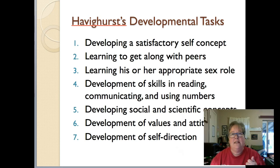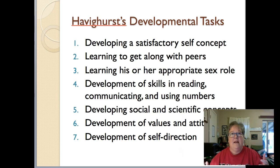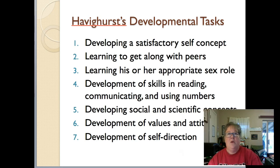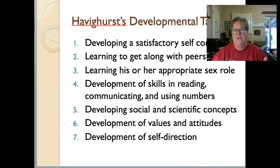Fifth is developing social and scientific concepts. Scientific concepts include things like gravity — knowing that when you drop something it will fall. Social concepts include the routines kids learn at school: where do you go in the morning, what happens at calendar time, what do we do during reading time, what happens when the teacher takes us to the bathroom. Sixth is development of values and attitudes.